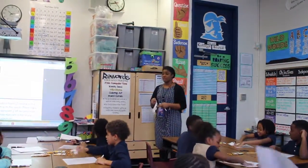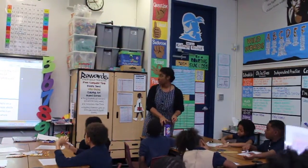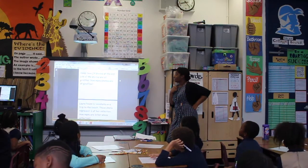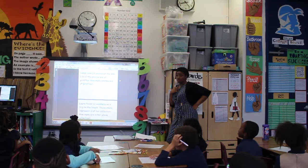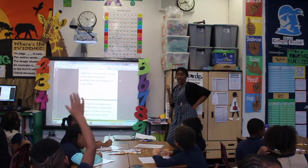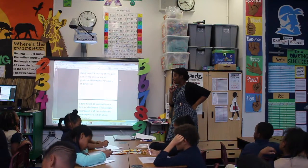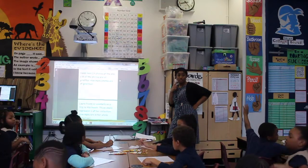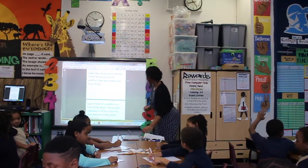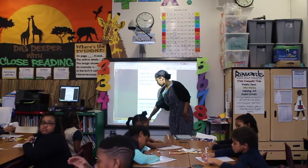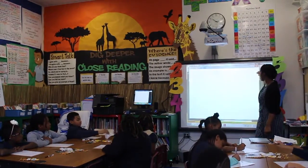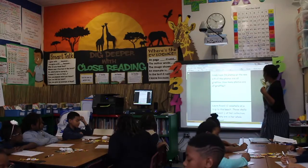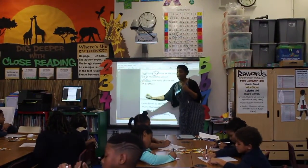All eyes up here. Someone read this one for me. Darius: Caleb took 24 photos at the zoo. One eighth of the photos are of giraffes. How many photos are of giraffes? So this is one that gave us a lot of issues. What information do we have here based on our fractions? We took 24 photos at the zoo, and we have one eighth of them are giraffes. That's the important information we need in order to figure this out.